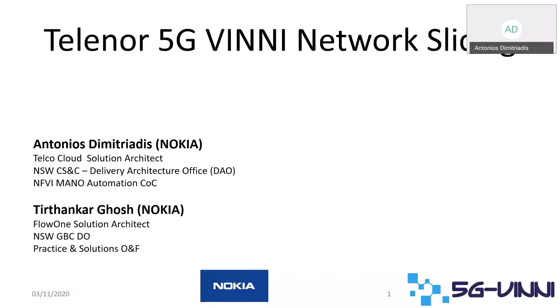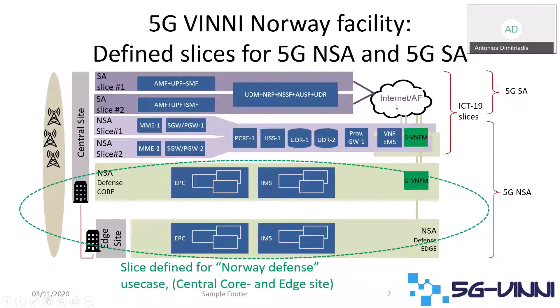5G VINI is a research project led by Telenor in Norway, and Nokia is a partner of it. Regarding the network slices, we have a dynamic environment. Currently we use five slices — standalone, non-standalone, and distributed slices into different sites for defense. But in the future, we may have 10 to 100 slices, which is why it's really important to automate that part.